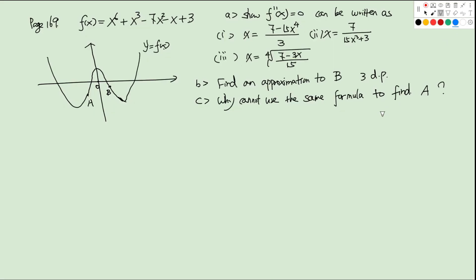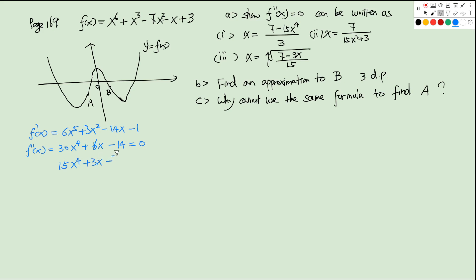There is one challenge question for this chapter on page 169. We have a function f(x) with a graph given, and we first want to show that f''(x) = 0 can be written in certain forms. We calculate f'(x) = 6x⁵ + 3x² - 14x - 1, and then f''(x) = 30x⁴ + 6x - 14. Setting f''(x) = 0 and dividing by 2 gives 15x⁴ + 3x - 7 = 0. Rearranging: x = (7 - 15x⁴)/3.